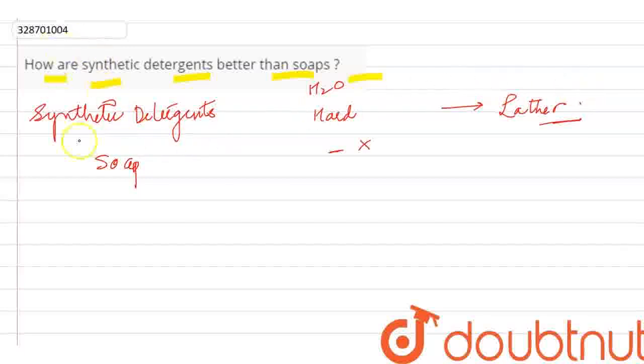If I talk about the reaction, when soap reacts with water containing calcium and magnesium ions, we get insoluble precipitate. When we use synthetic detergents, we get a soluble reaction.